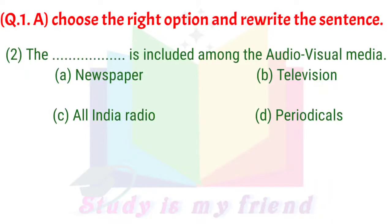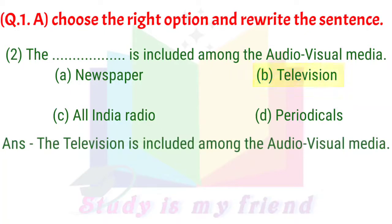Question 2: The ___ is included among the audio-visual media. A. Newspaper, B. Television, C. All India Radio, D. Periodicals. Answer: Television is included among the audio-visual media.